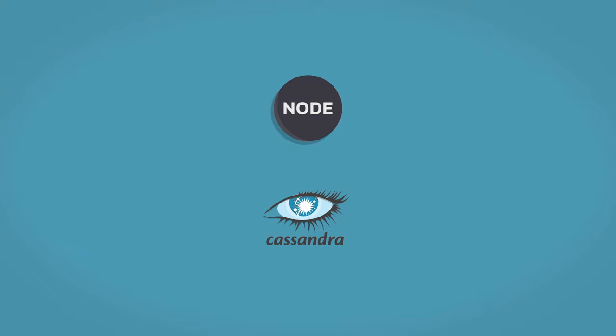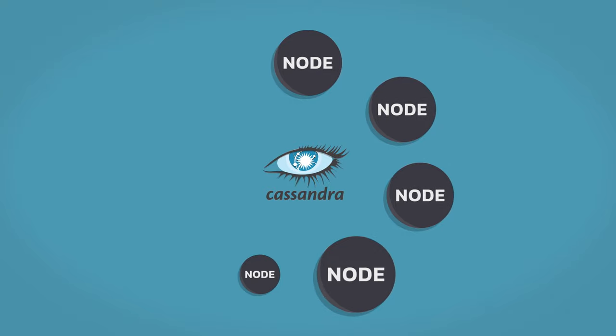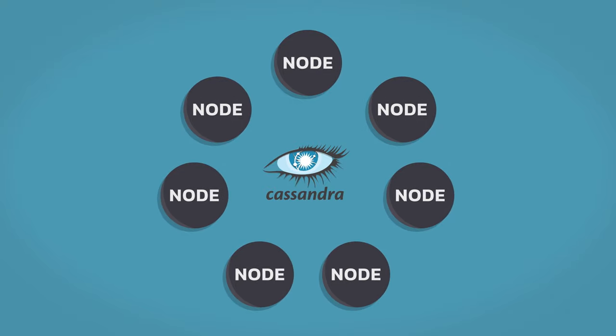Cassandra is a distributed database. While you could technically run it on a single node, it would kind of defeat the purpose of what it's meant to do. It is also a leaderless peer-to-peer system, meaning any node can do what any other node can. We'll explore more what this means a little bit later.